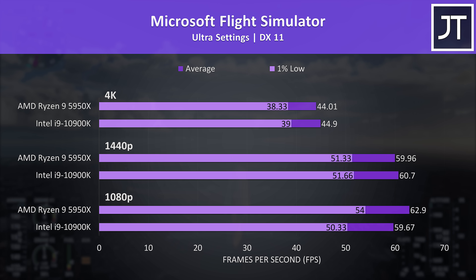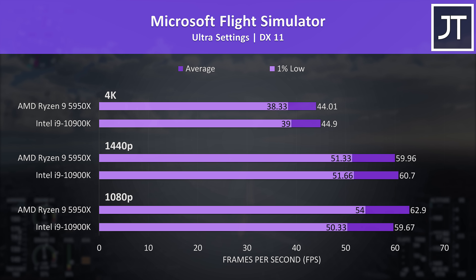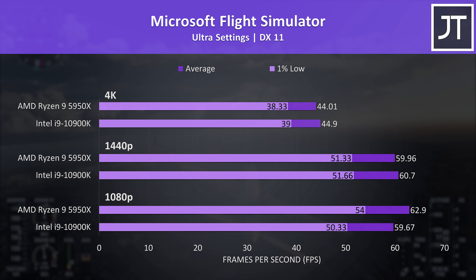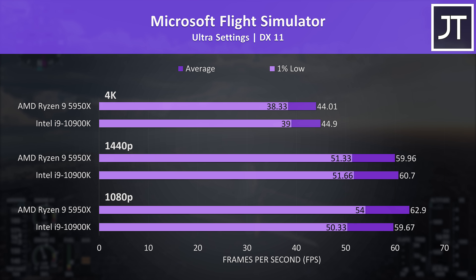Microsoft Flight Simulator was tested in the Sydney landing challenge — again no major differences between the two here, basically the same results at 1440p or 4K, while the 5950X had a slightly higher 5% lead over the 10900K at 1080p, with a higher 7% boost to 1% low.